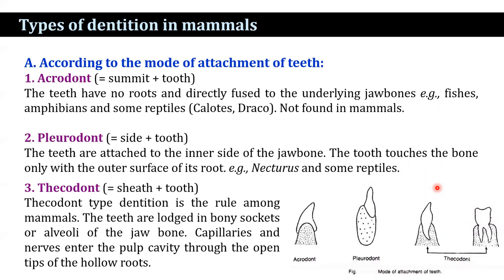Teeth are classified by several modes. On the basis of their attachment, teeth fall into three categories: acrodont, pleurodont, and thecodont. In the acrodont type, the teeth have no roots and are directly fused to the underlying jawbones. This is found in fishes, amphibians, and some reptiles, but not in mammals. In the pleurodont type, teeth are attached to the inner side of the jawbone, and the tooth touches the bone only with the outer surface of its roots; this is found in Necturus and some other reptiles.